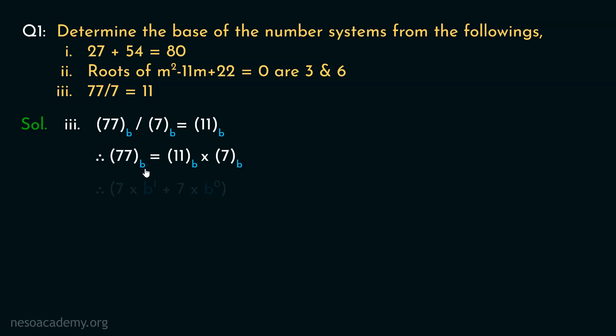So 77 base b will derive 7 into b raised to the power 1 plus 7 into b raised to the power 0. Similarly, 11 base b will derive 1 into b raised to the power 1 plus 1 into b raised to the power 0. Finally, 7 base b in decimal will be 7 into b raised to the power 0. From this we can state 7b plus 7 and from this we can state b plus 1 at first into 7. Taking 7 common out of the left hand side we obtain b plus 1 into 7. And the right hand side will remain the same. So we can state both the sides are having the same value b plus 1.